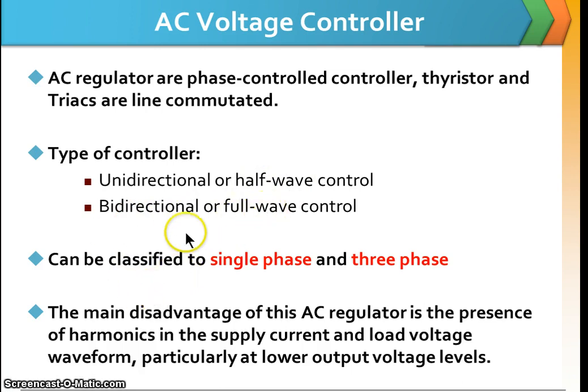It also can be classified as single phase and three phase systems. The main disadvantage of this AC regulator is the presence of harmonics in the supply current and load voltage waveform, particularly at low output voltage levels.